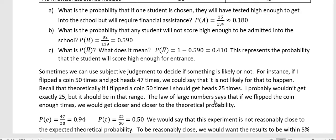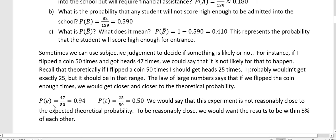But there is a law of large numbers that says if we flip the coin enough times, we would get closer and closer to the theoretical probability. In my particular example, the probability of my experiment - I got 47 heads out of 50 times - that's 94%. But theoretically, I should get 25 out of 50, which would be 50%. So you can see that my experimental and theoretical are not close.